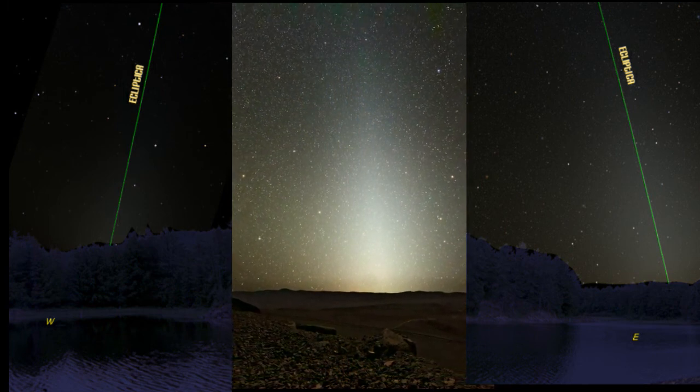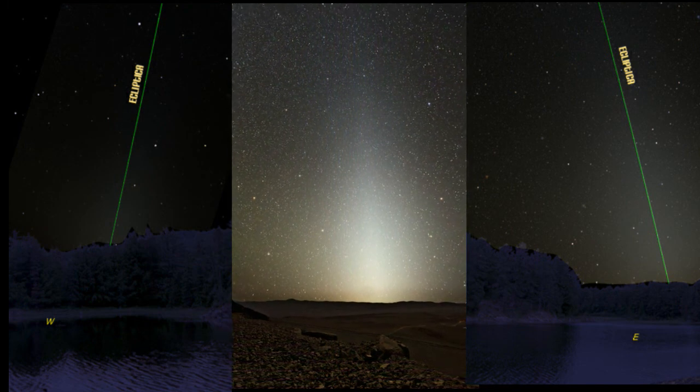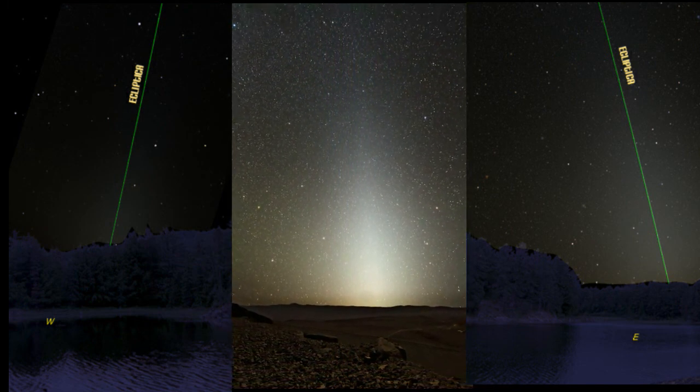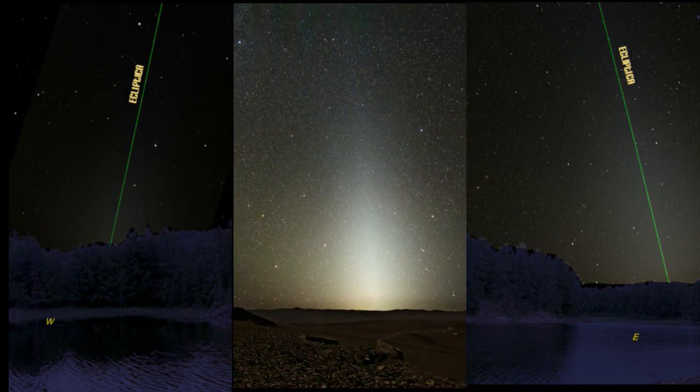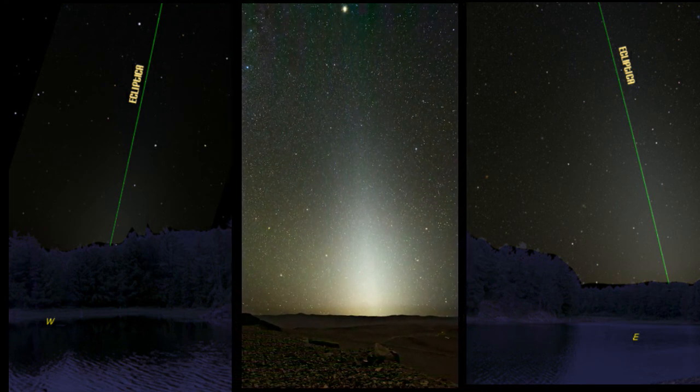Justo antes del amanecer o tras el crepúsculo solar, se alzará sobre el horizonte un exiguo triángulo de luz, resultante de la difusión de los fotones procedentes del Sol al atravesar el polvo interplanetario.